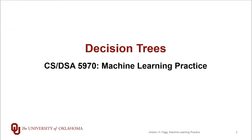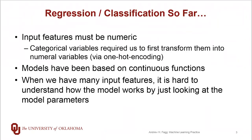We've been talking so far about both regression and classification. However, the models we've been focused on have really been a restricted class of models, and these models make a number of different kinds of assumptions. First off, we've made the assumption that our input features are numeric. We have talked about categorical variables, or the other term is enumerated-type variables. In order to use any of the models we've talked about so far, we've had to first transform these variables into numerical form, and in particular, one-hot encoding is one of those tools that makes this possible.